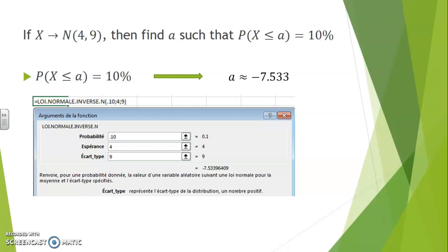In this case, minus 7.53 would be the cutoff point for the lower 10% of the distribution.